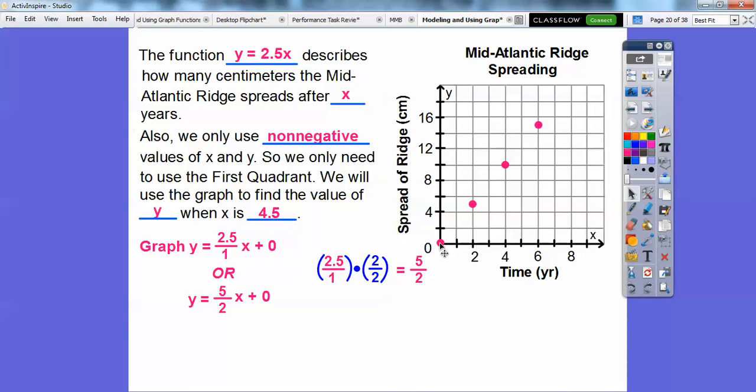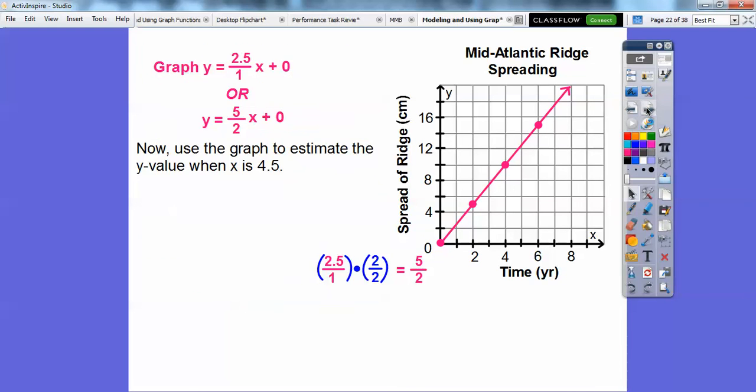Here I can go up 5 over 2. So here's up 2, 4, 5 and then over 2. Up 5 over 2. Up 5 over 2. So we can keep doing that forever. It just makes a nice straight line. Now we're going to go ahead and use that graph to estimate the y value when x is 4.5. So let's go over to 4.5. Here's 4, here's 5, so here's 4.5. Go straight up. Go straight over. Here's 8, here's 10. 11 is right about there. It's just past 11.